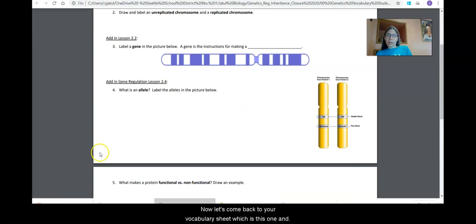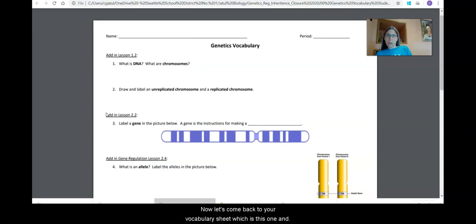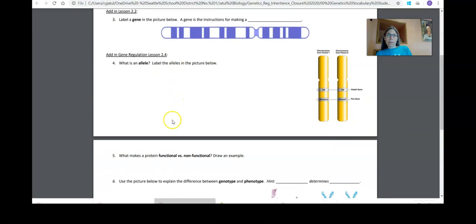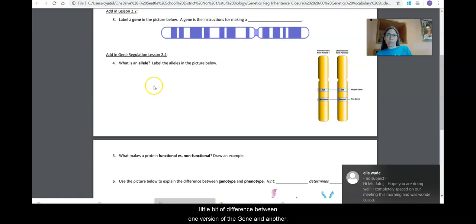Now let's come back to your vocabulary sheet, which is this one. And you should be able to label a gene in this chromosome, which again, is just a region. There's a number of genes per chromosome. So indicate one of these areas as a gene and a gene is instructions for making a protein. And since we're here, we can talk about the fact that since there can be variance in genes, we call those alleles. So when there's that little bit of difference between one version of the gene and another, that's what is, that's what an allele is.